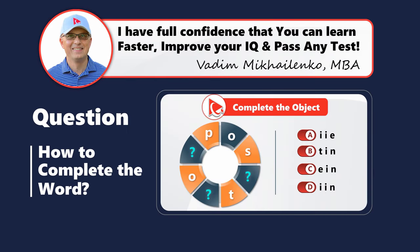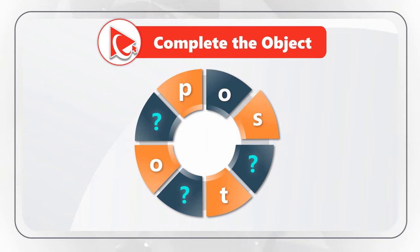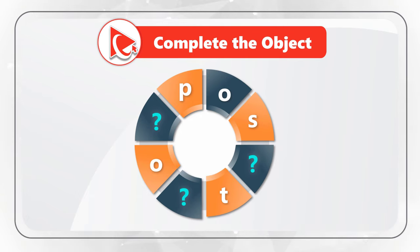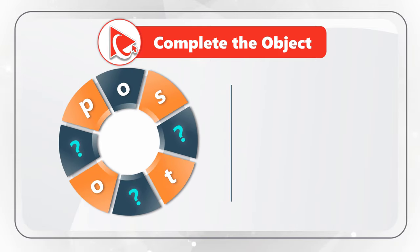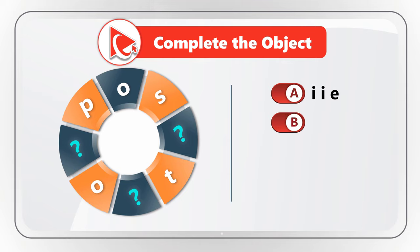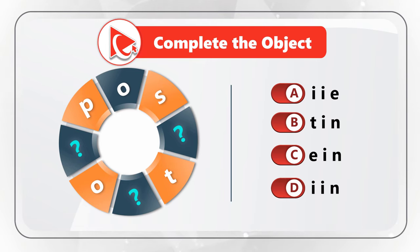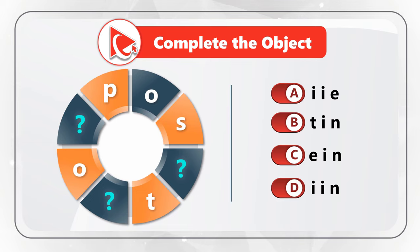Here is an amazing question with an answer that will definitely surprise you. You're presented with a circle broken down into eight parts. Each part has a letter inside, and the letters are O, S, then comes a missing letter, T, another missing letter, O, another missing letter, and ends in P. You need to complete the object by selecting a choice of three grouped letters. Choice A is I, I, E. Choice B is T, I, N. Choice C is E, I, N. And Choice D is I, I, N. Take a close look to see if you can complete the object.